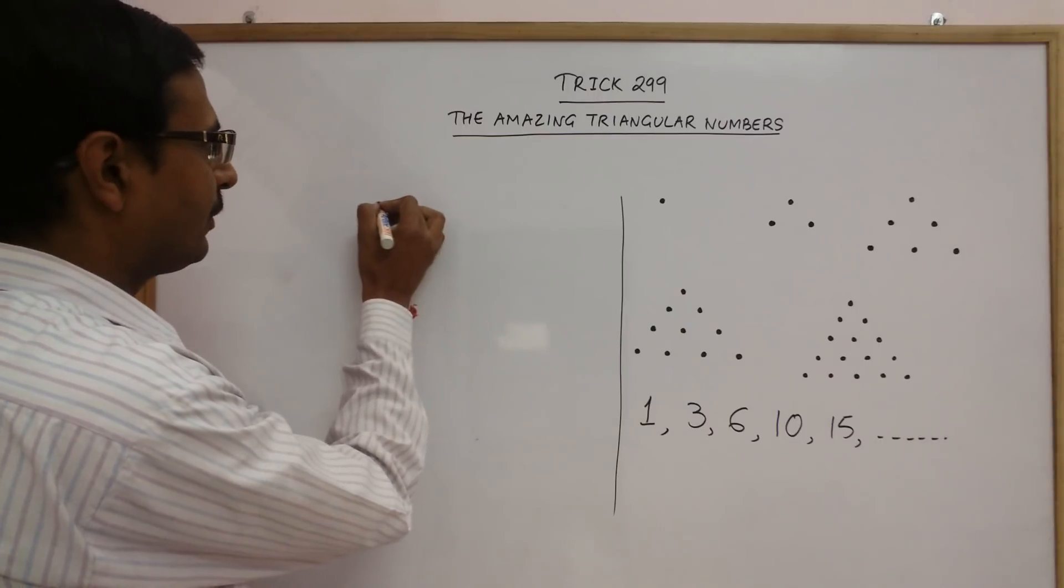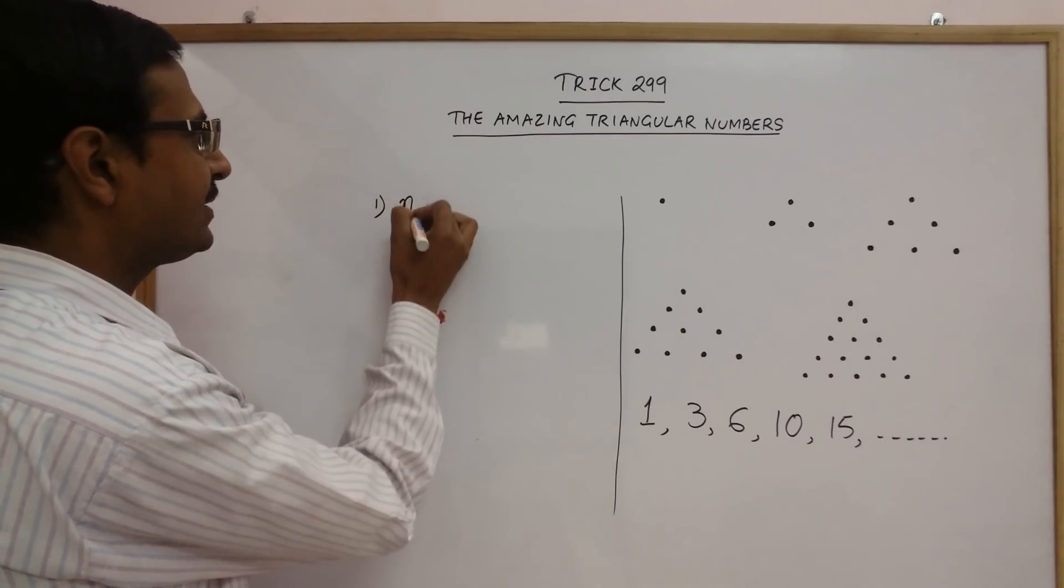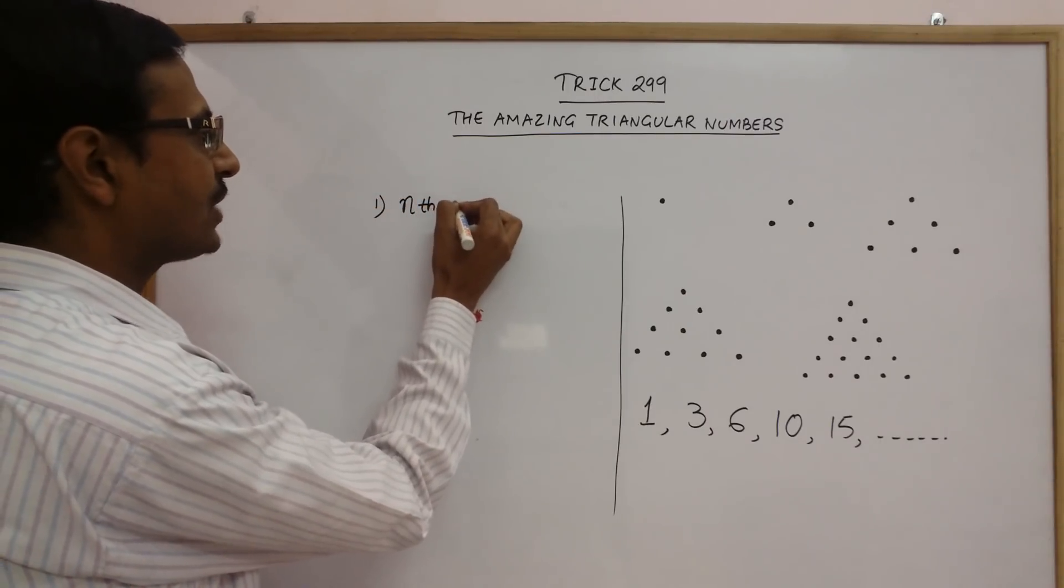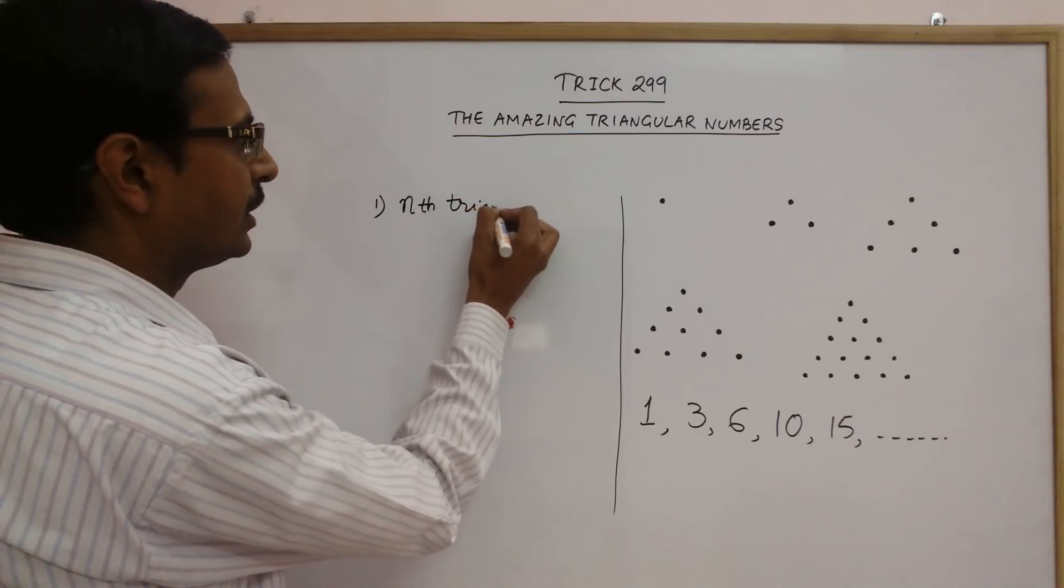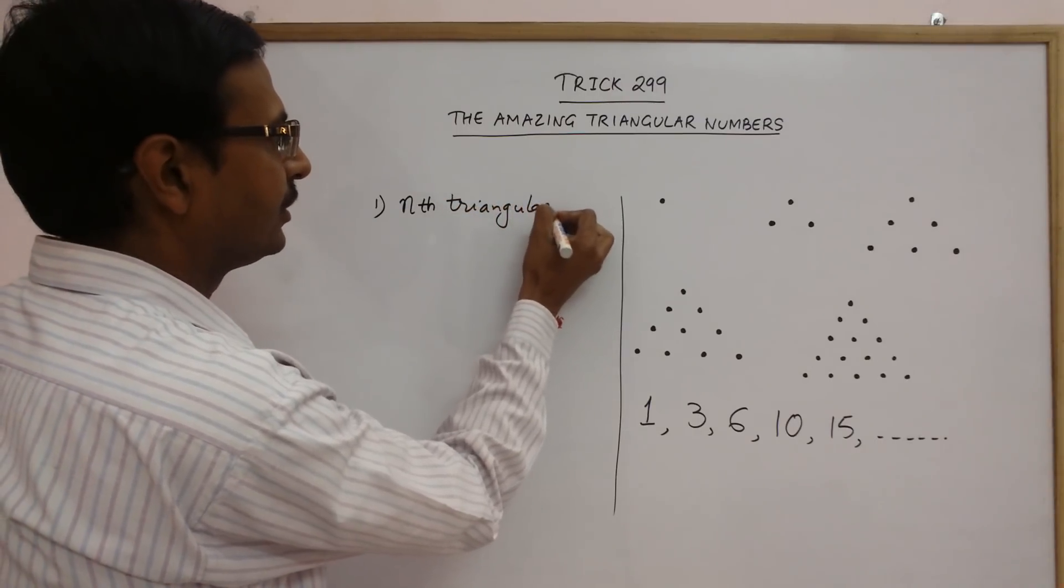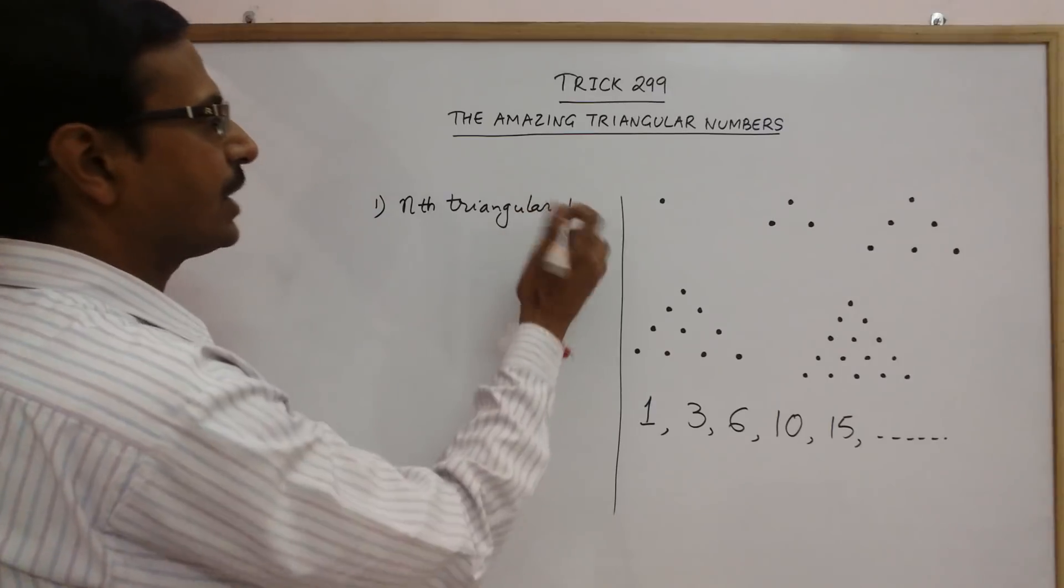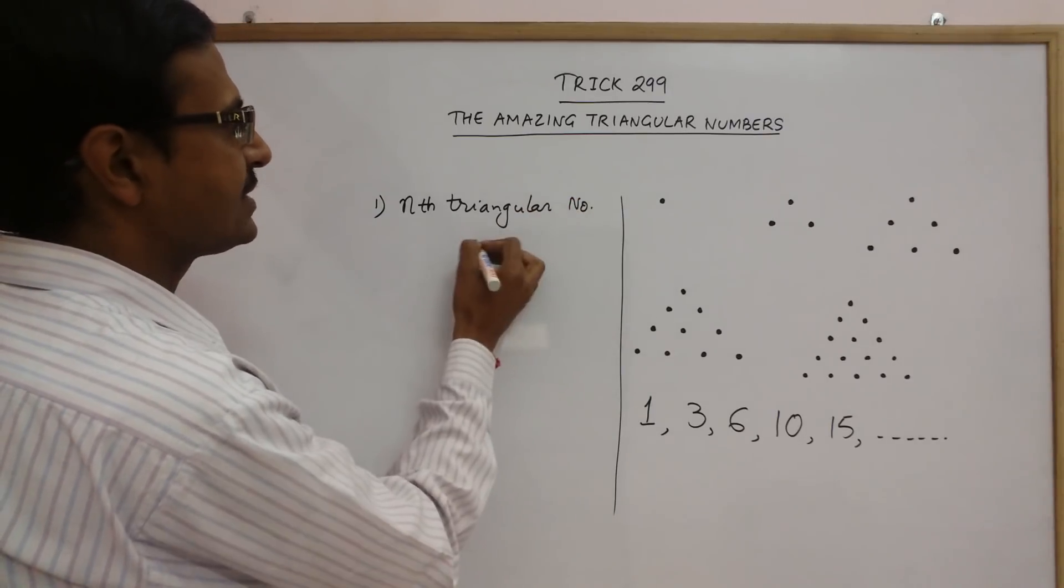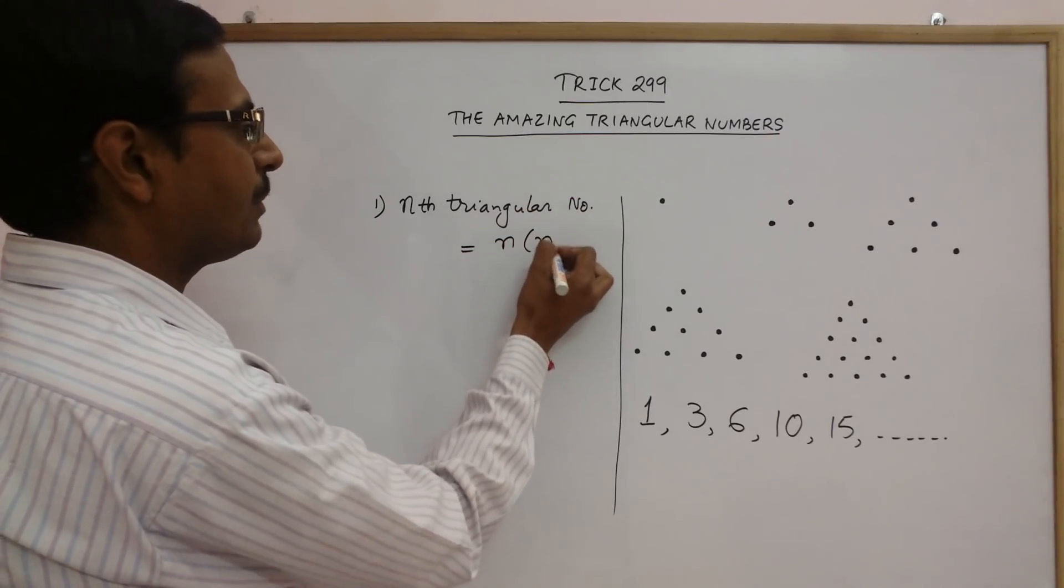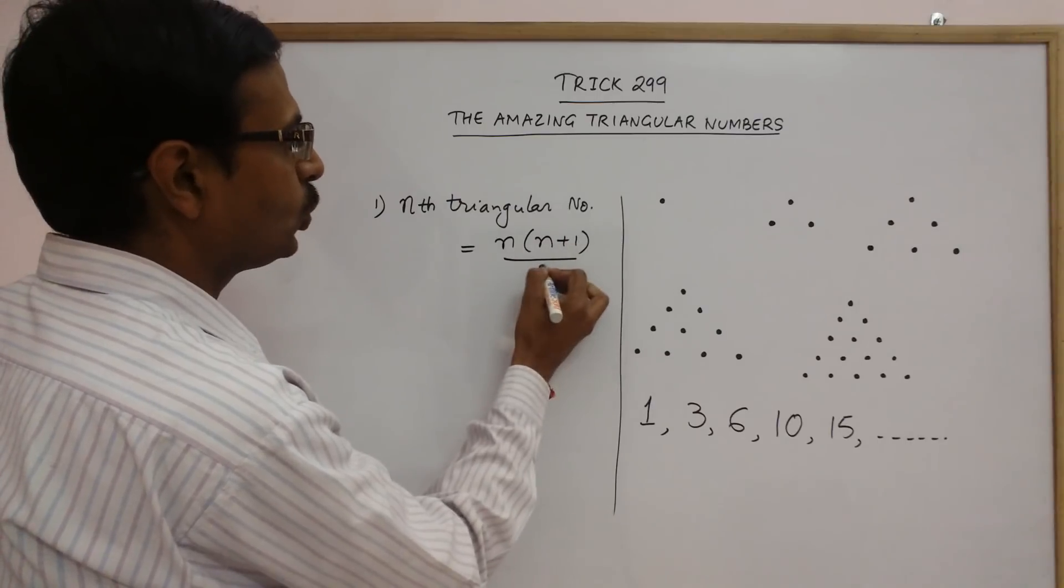Now, the properties of triangular number, the first is nth triangular number is given by n into n plus 1 upon 2.